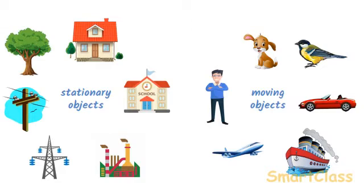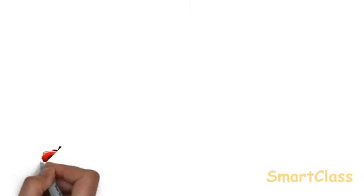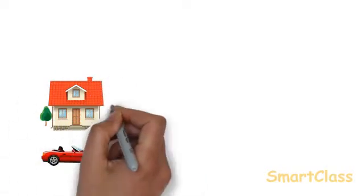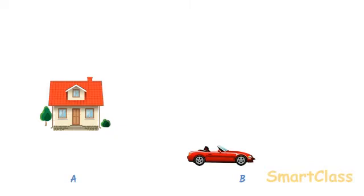The movement of an object is called motion. An object is said to be in motion or moving when it changes its position with time. For example, a moving car at position A in front of a house at a particular time will be at position B after 5 seconds which is little far from the house.